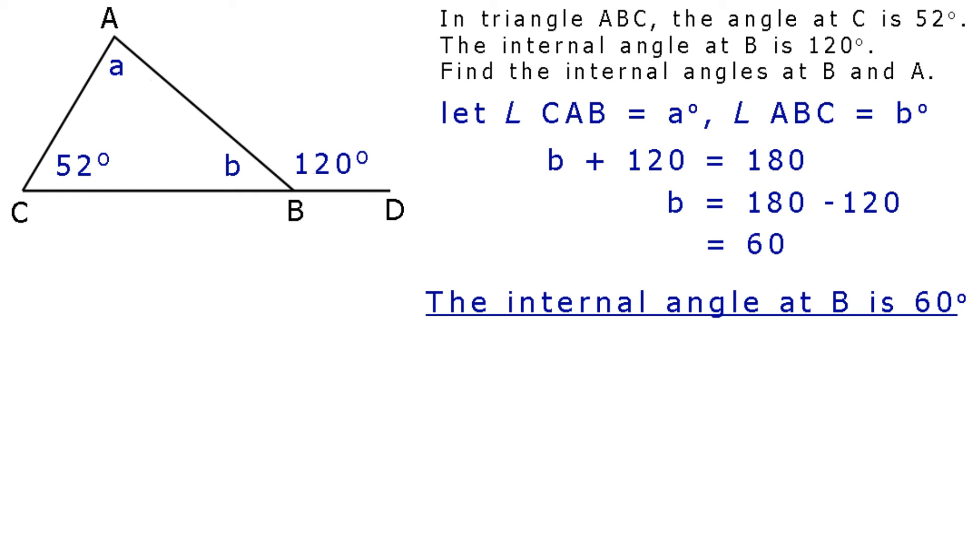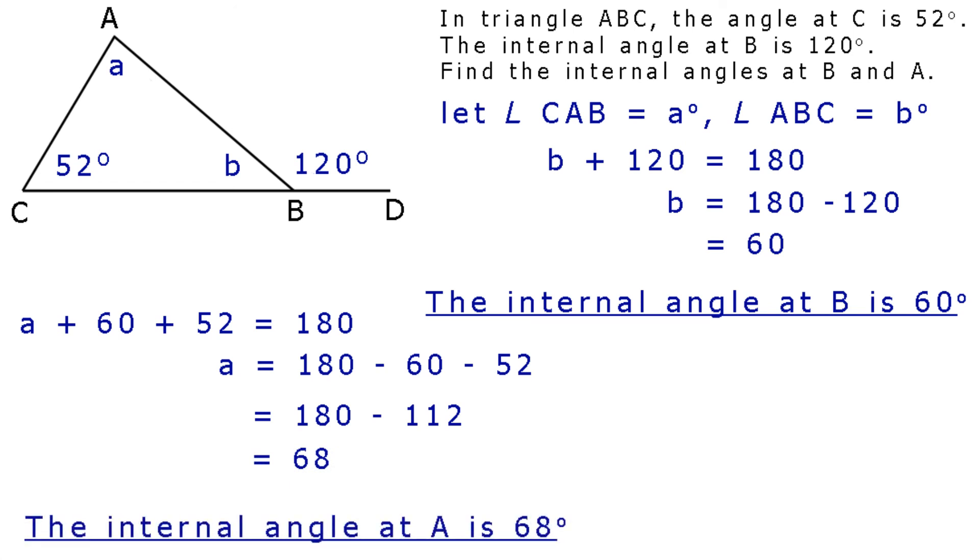And now to find the internal angle at A. Remembering that the three angles in a triangle equal 180 degrees, we can write A plus 60 plus 52 equals 180. Taking the 60 and the 52 to the other side of the equation and changing the sign, A equals 180 minus 60 minus 52, which gives A equals 180 minus 112. So, A equals 68. Our answer is, therefore, the internal angle at A is 68 degrees.